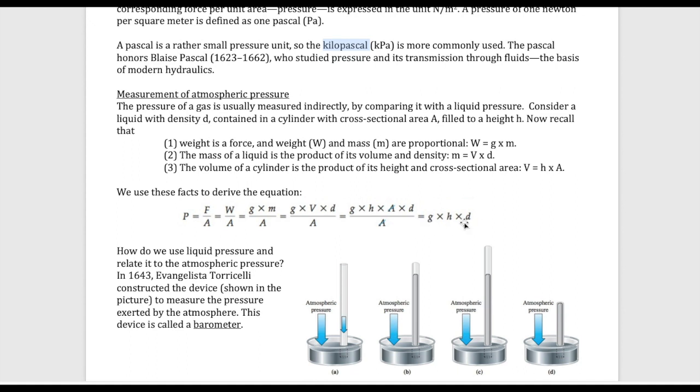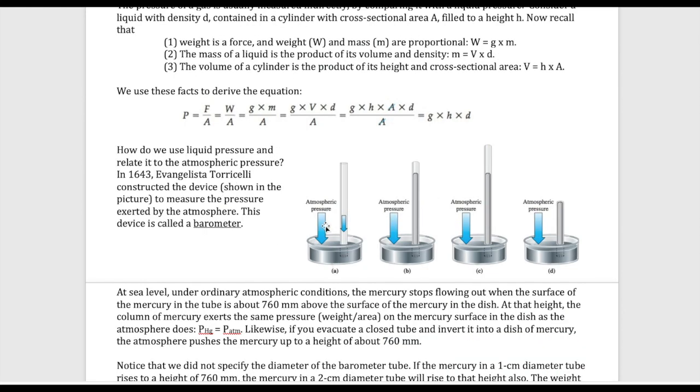So those two numbers are not going to change; what's going to change is the height. The person who discovered that relationship of pressure to height of a liquid is Torricelli, and he is actually the person who also invented this device to help measure pressure, and that device is called a barometer. And this is the simplest possible barometer you can have.